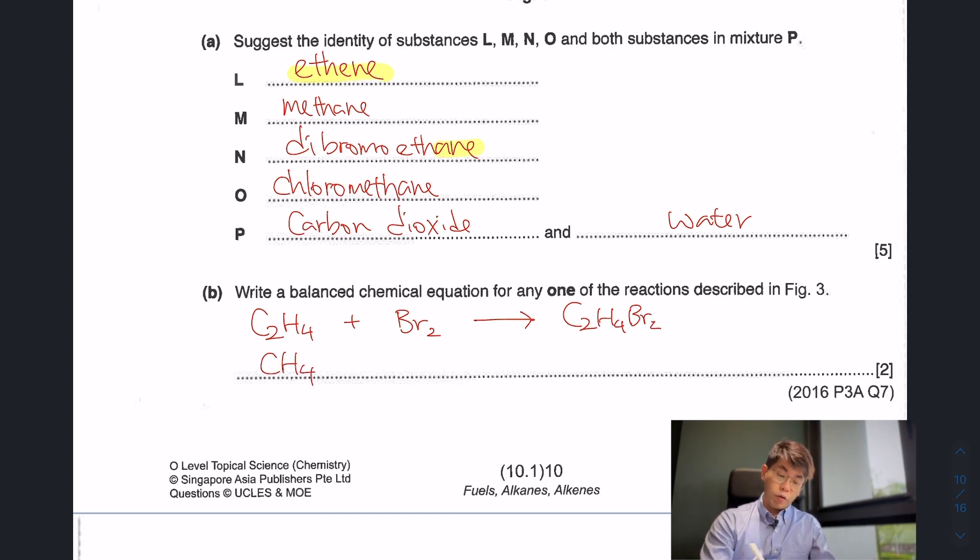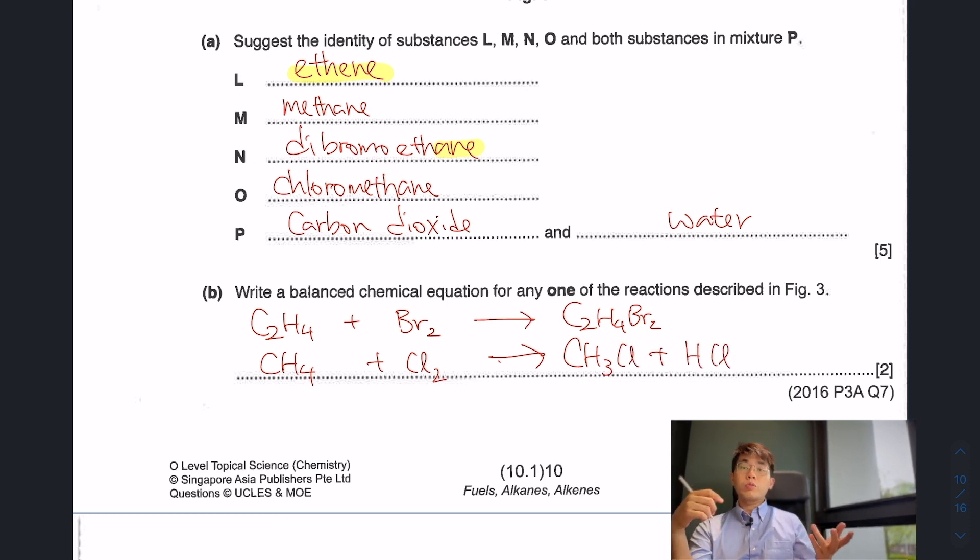The other one is my methane, CH4 plus the chlorine gas. We do a substitution, so we get CH3Cl and HCl. And of course, we got the two combustion reactions which you can write as well. So I hope you understood how to do A3. A3 is quite an interesting question. Please go and practice it. All the best. Bye.